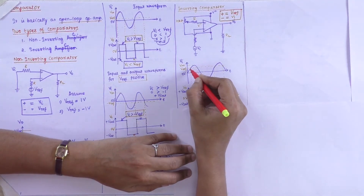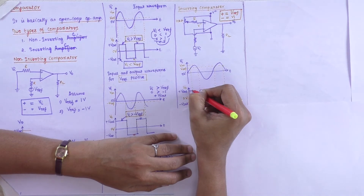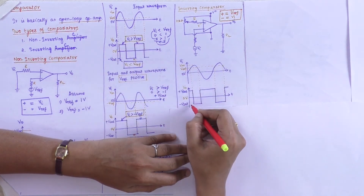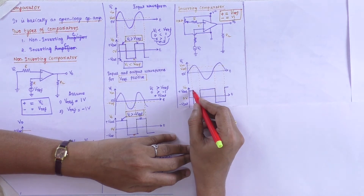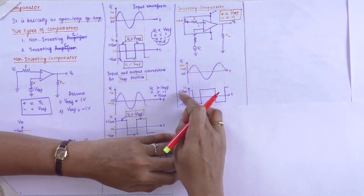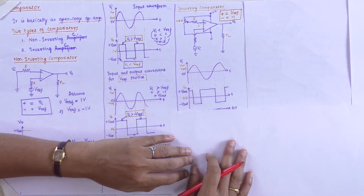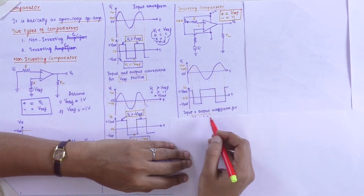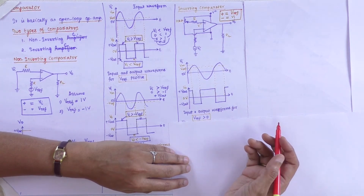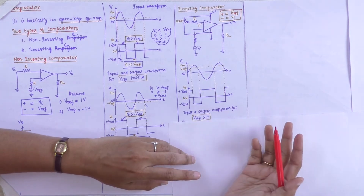If it starts with negative in non-inverting, the inverting result is produced in the positive cycle. Here it starts with V reference as dotted lines. Earlier we started with minus V saturation, but in this inverting case, it starts with plus V saturation. The rest continues based on plus V saturation. This is the input and output waveforms for V reference greater than 0 V (positive voltage).